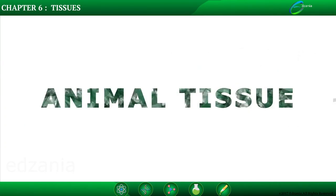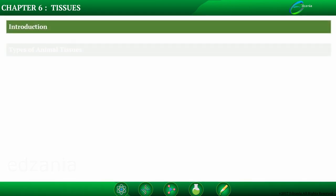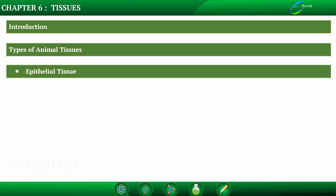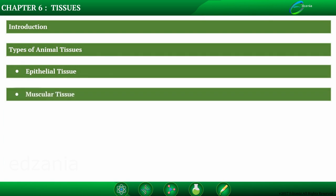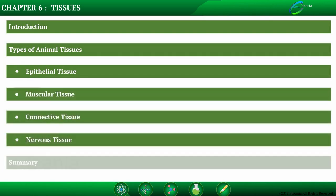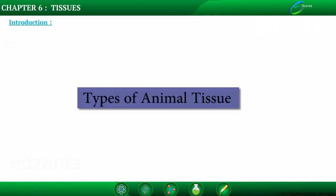This chapter covers Animal Tissues. Topics to be covered include: Introduction and Types of Animal Tissues. We are going to study different types of animal tissues: epithelial tissue, muscular tissue, connective tissue, nervous tissue, and a summary.